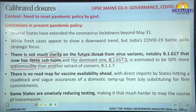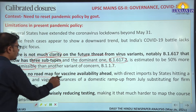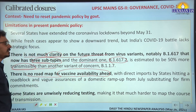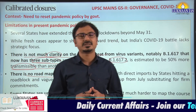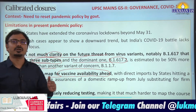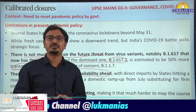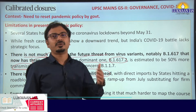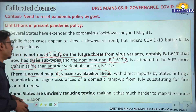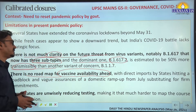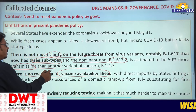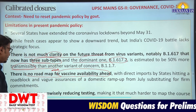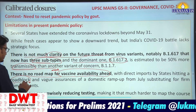There is no road map for vaccine availability ahead. At present, the central government is abdicating its responsibility of universal vaccination in the country, placing responsibility on the shoulders of state governments. State governments are not equally positioned to provide vaccines on an equitable basis to their people. Therefore, universal vaccination remains a long road ahead.